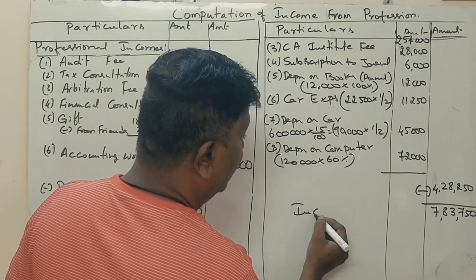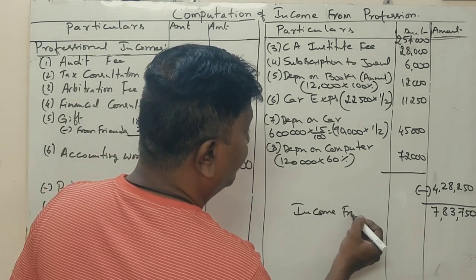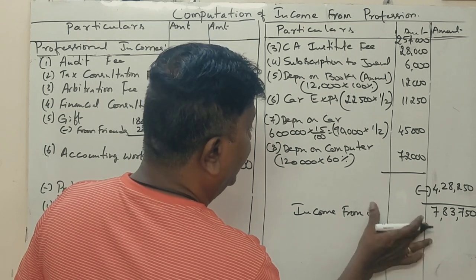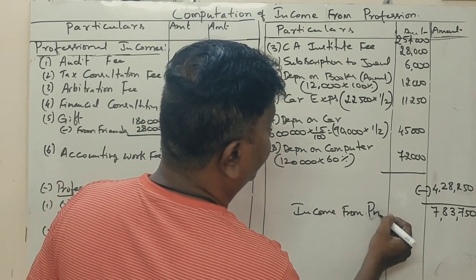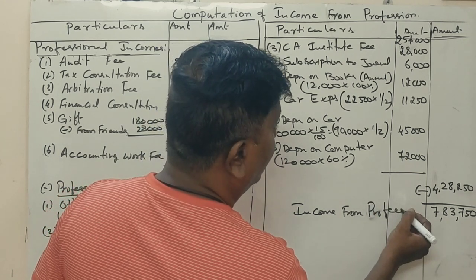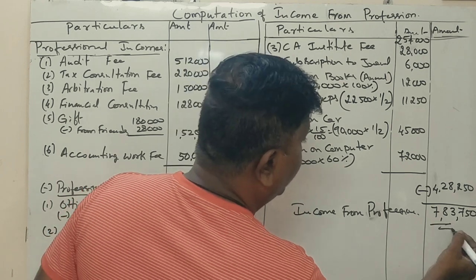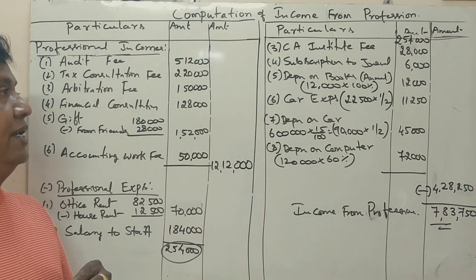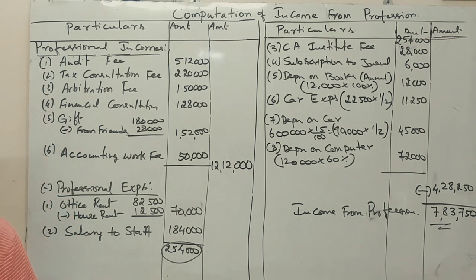This is called Income from Profession: 7,83,750 rupees. This model question carries 14 marks. Clean and practice. Thank you so much.